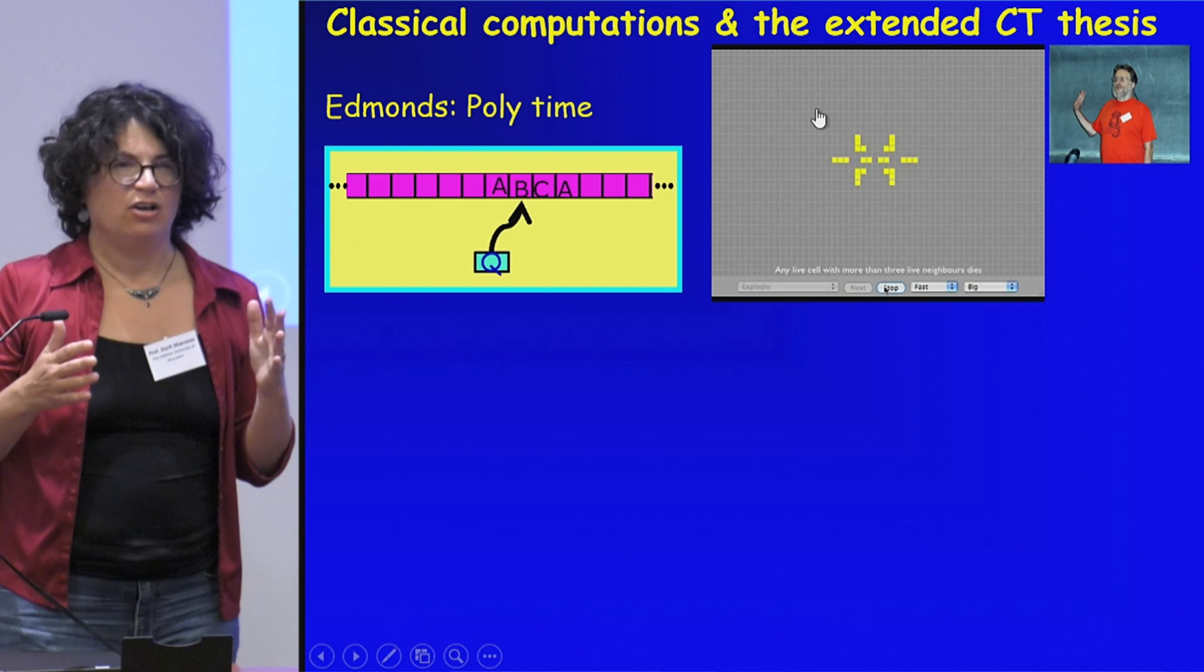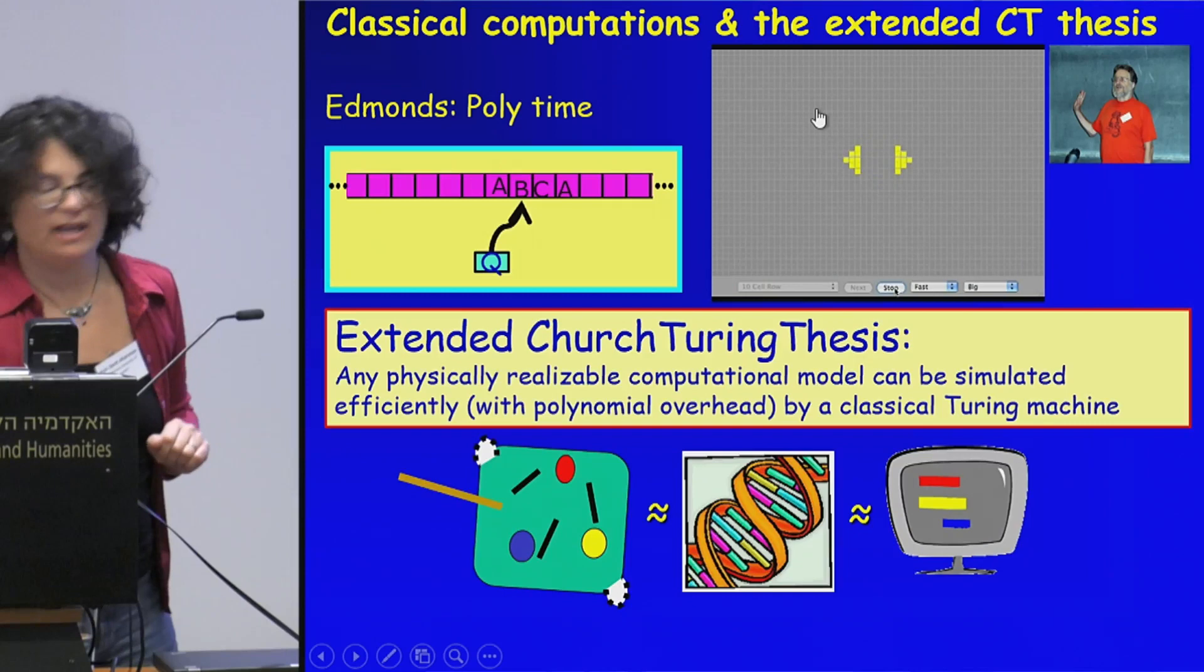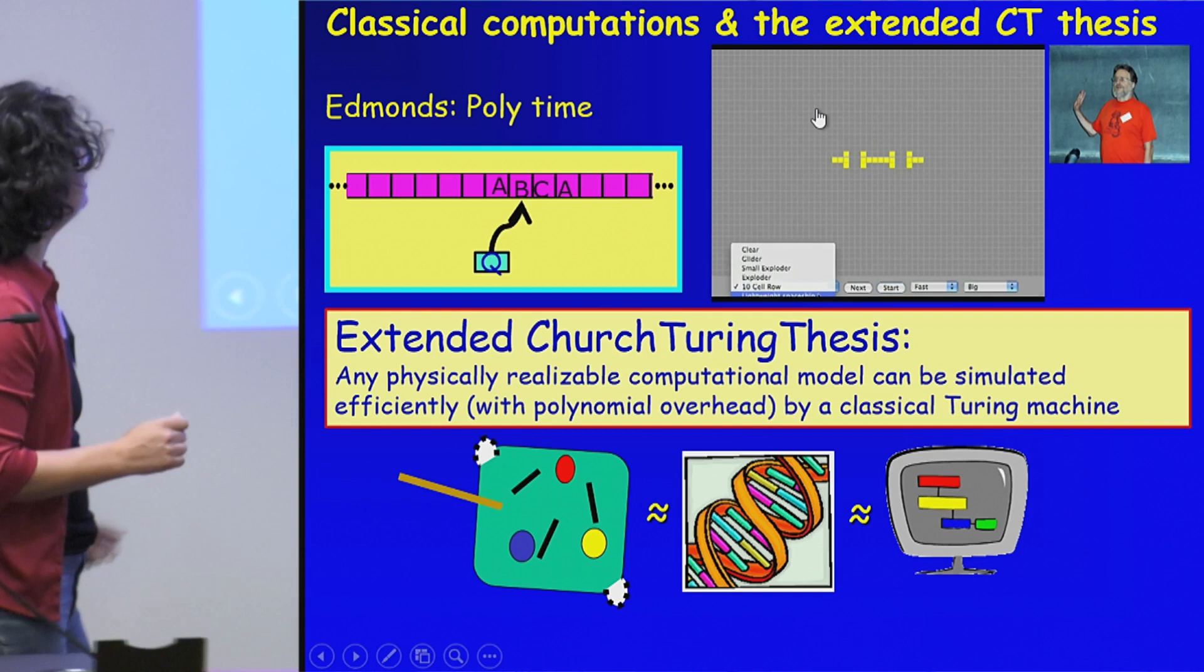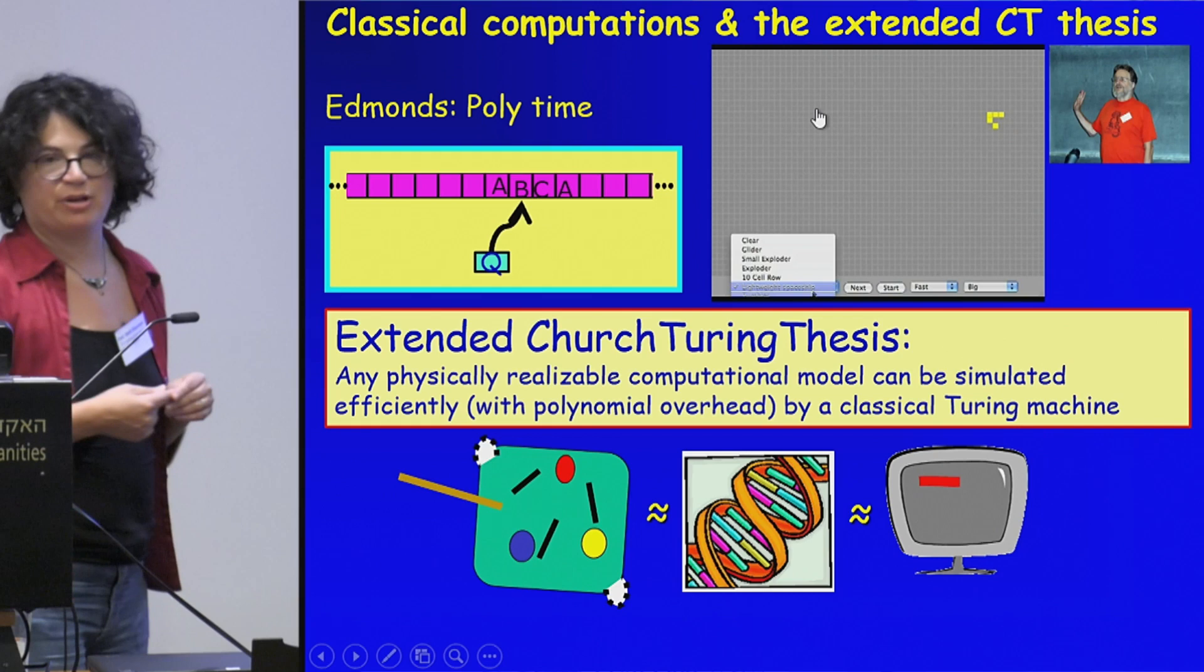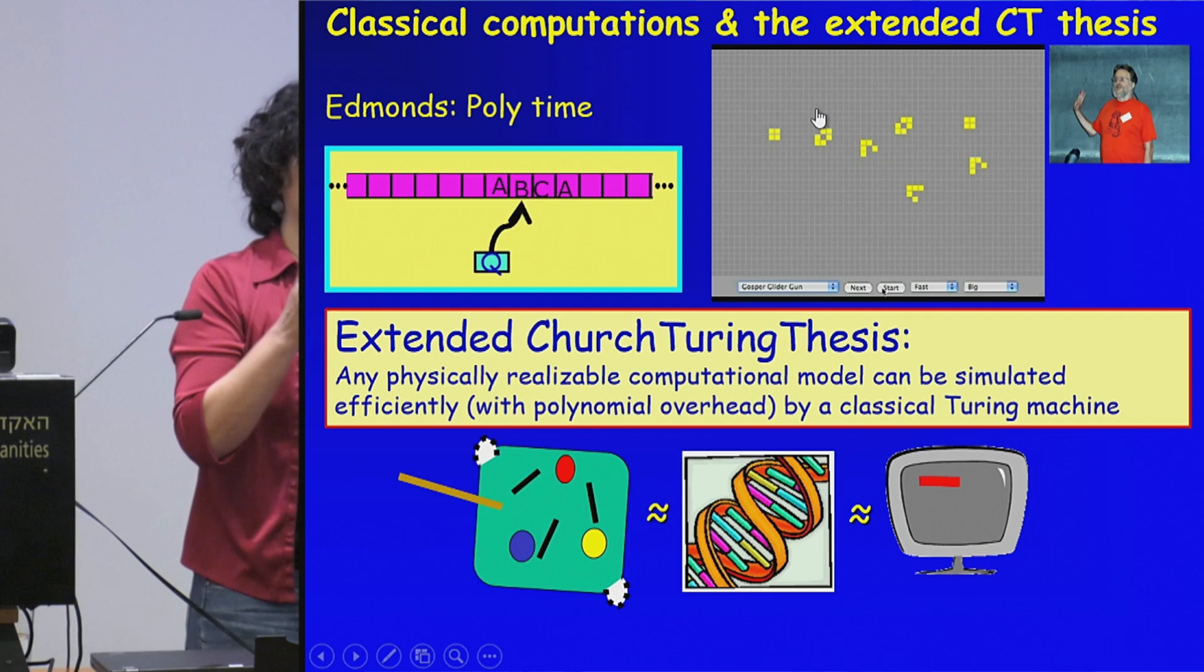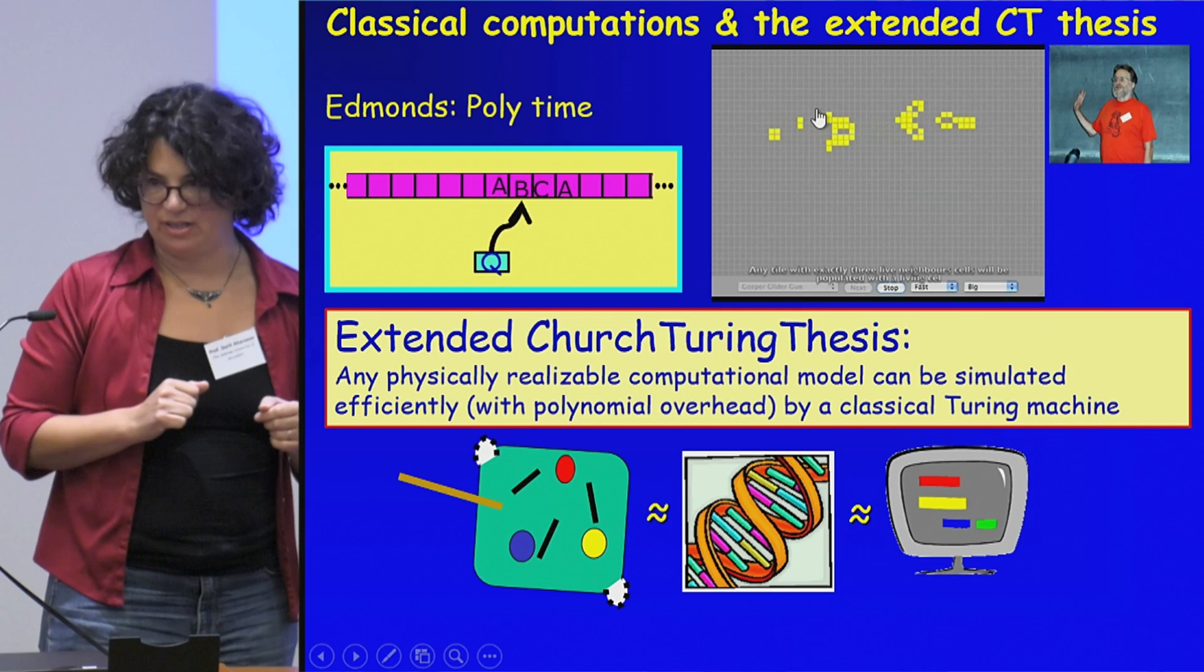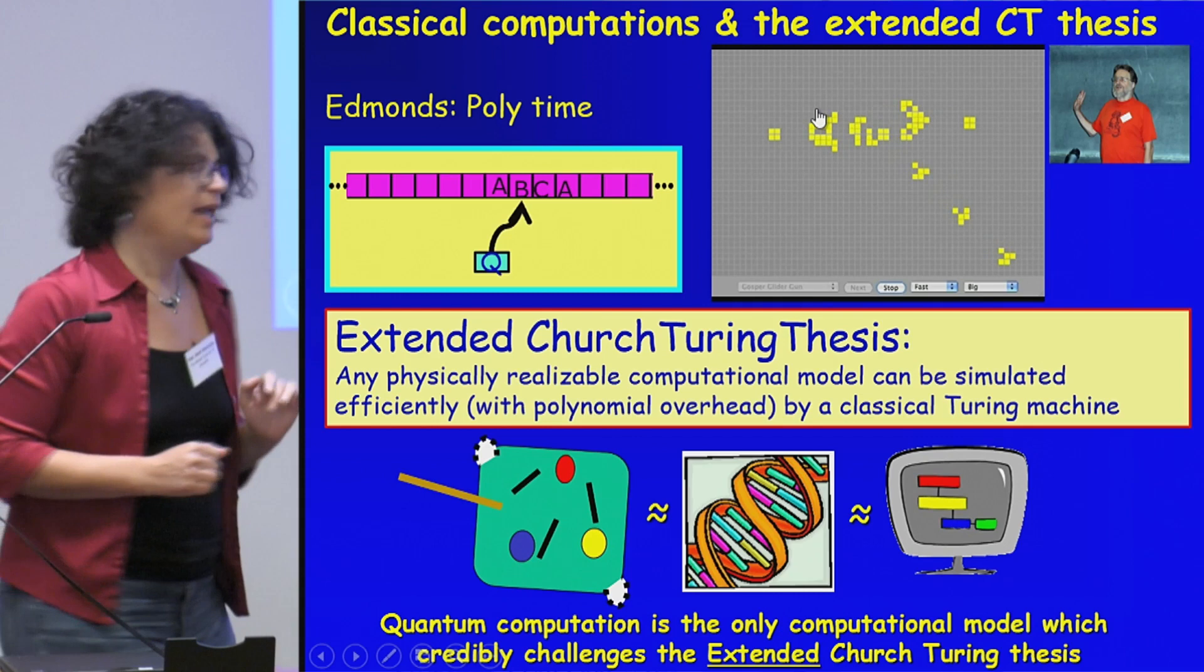And the point is that all classical computational models, if you view them through this polynomial time resolution, they all look alike. They're all based on the same idea. And they're all in some sense equivalent. This is captured by the extended Church-Turing thesis that says that any physically realizable computational model can be simulated efficiently with polynomial overhead by classical Turing machine. So by classical computer. And this includes DNA computers and also computers based on chaos, et cetera. And the essence of quantum computation is that it seems, nothing is proven, to be violating this extended Church-Turing thesis.